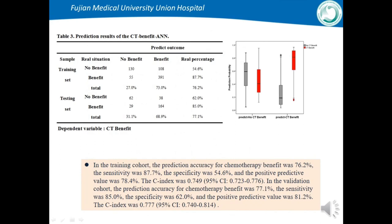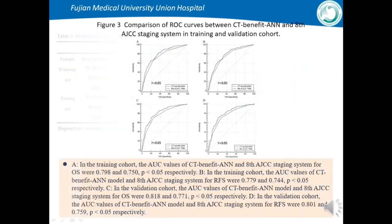Table 3 and Figure 3 show the prediction results of the chemotherapy benefit ANN. In both the training and validation cohorts, the ANN showed good predictive ability. The C-index was 0.749 in the training cohort and 0.777 in the validation cohort. Figure 2 showed comparison of ROC curves between the chemotherapy benefit ANN and the AJCC staging system; in both cases, the chemotherapy benefit ANN had better ability in predicting OS and RFS.